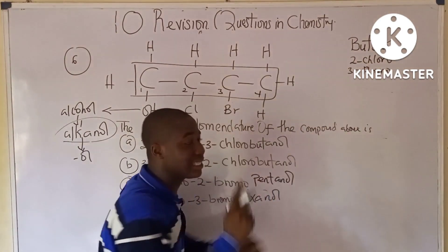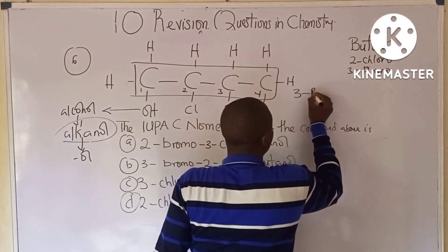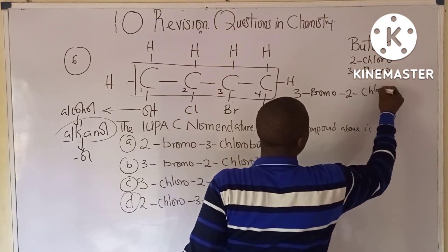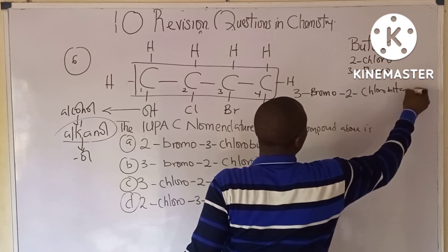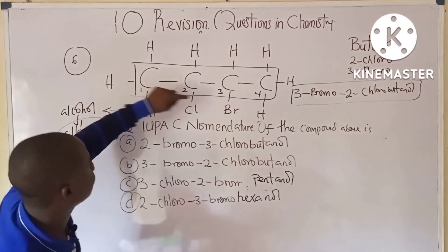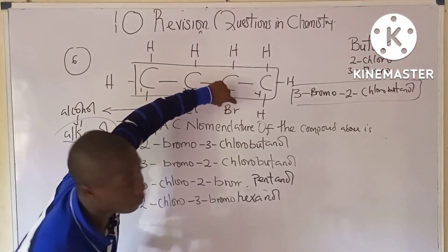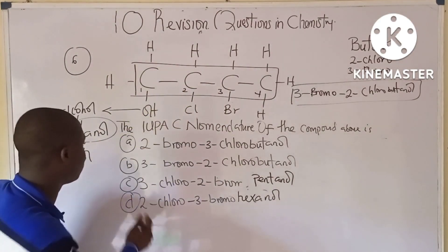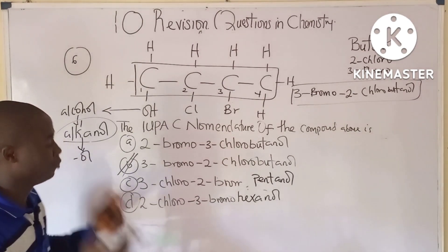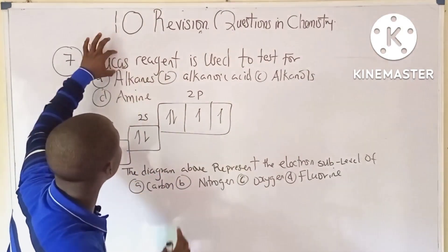At carbon 2 there is a chloro group and at carbon 3 there is a bromo group. Alphabetically, 'b' comes before 'c', so we name bromo first. The full IUPAC name is 3-bromo-2-chlorobutanol, which is option B.